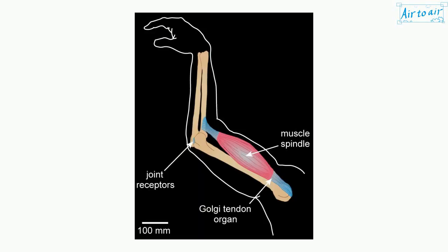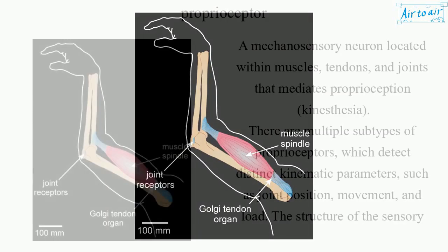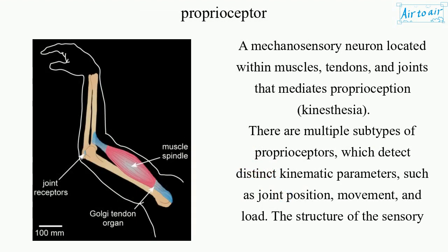Proprioceptor: a mechanosensory neuron located within muscles, tendons, and joints that mediates proprioception.